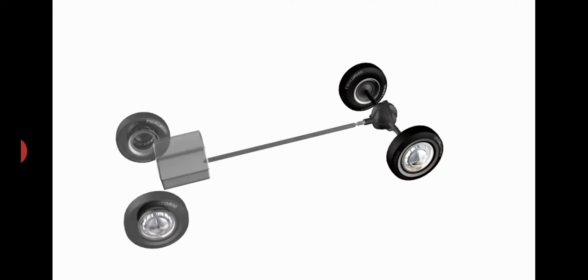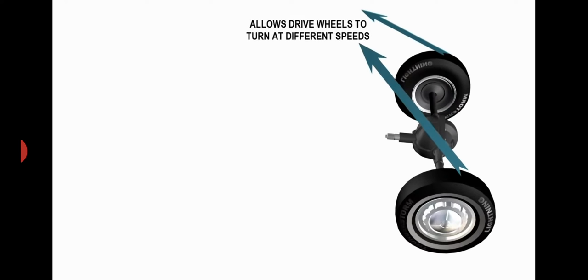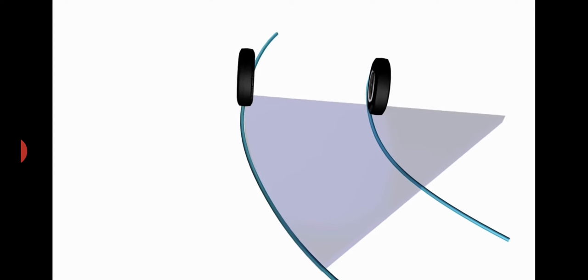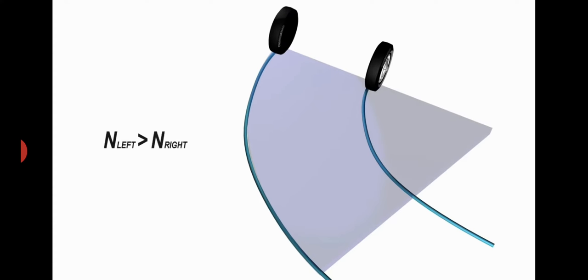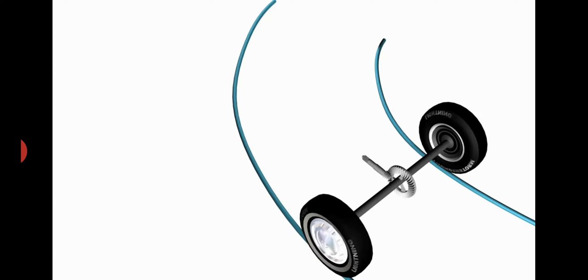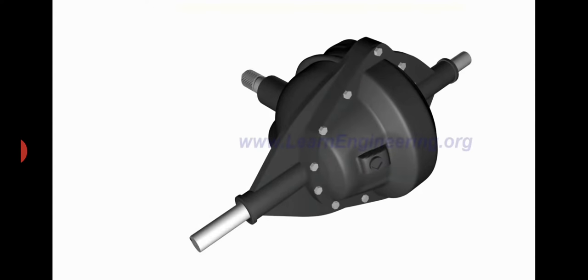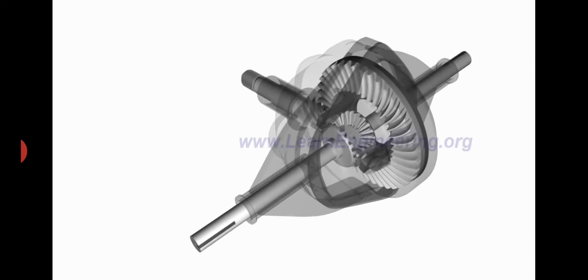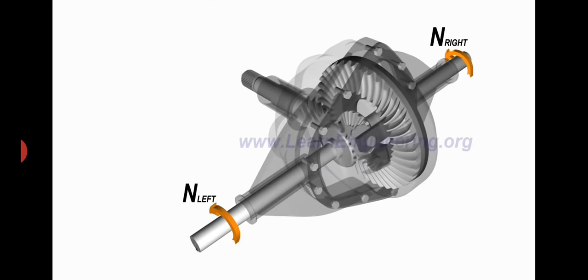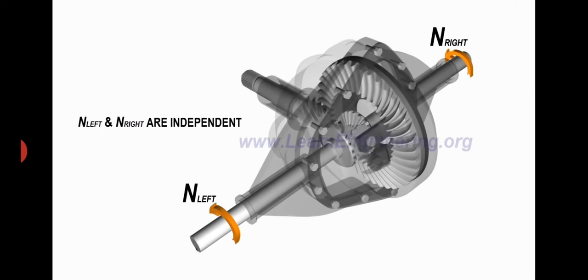The main function of the differential is to allow the wheels to turn at different RPM while receiving power from the engine. Consider these wheels which are negotiating a turn — it is clear that the left wheel has to travel more distance compared to the right wheel, which means the left wheel has to rotate at a higher speed. If these wheels were connected using a solid shaft, the wheels would have to slip to accomplish the turn. This is exactly where the differential comes in. The ingenious mechanism in a differential allows left and right wheels to turn at different RPM while transferring power to both wheels. We will learn how the differential achieves this in a step-by-step manner using its simplest configuration.